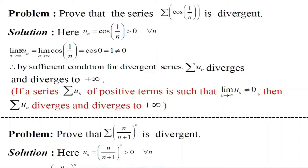The limit of u_n as n tends to infinity equals the limit of cos(1/n) as n tends to infinity. As n tends to infinity, 1/n tends to 0. Therefore, cos(0) = 1, which is not equal to 0.